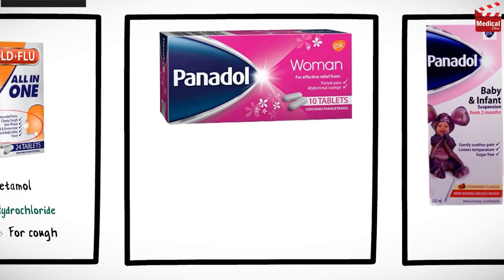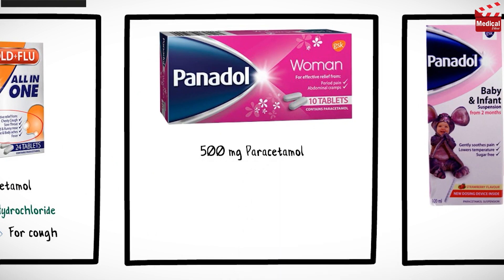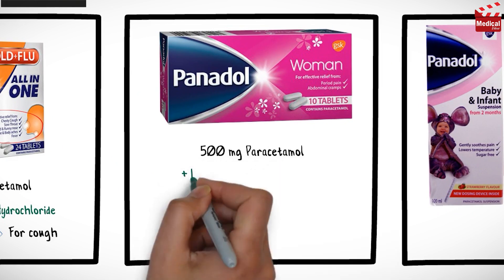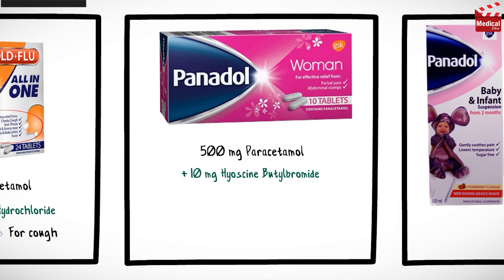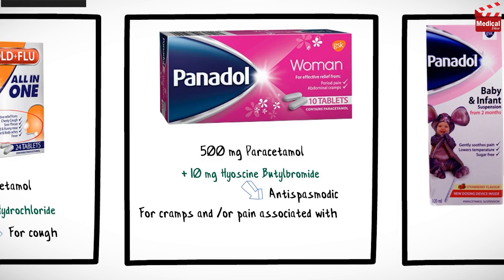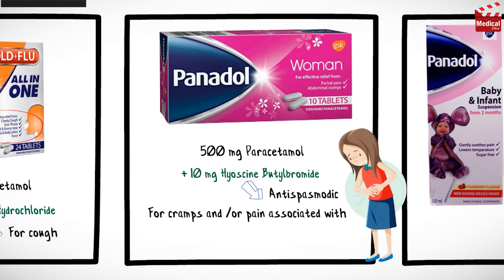Panadol Woman contains 500 mg paracetamol and 10 mg hyoscine butylbromide, which is an antispasmodic. It is indicated in the treatment of cramps or pain associated with period pain and abdominal cramps.